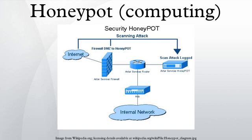In general, high-interaction honeypots provide more security by being difficult to detect, but they are highly expensive to maintain. If virtual machines are not available, one honeypot must be maintained for each physical computer, which can be exorbitantly expensive. Example: HoneyNet. Low-interaction honeypots simulate only the services frequently requested by attackers. Since they consume relatively few resources, multiple virtual machines can easily be hosted on one physical system. The virtual systems have a short response time, and less code is required, reducing the complexity of the virtual system's security. Example: Onude.